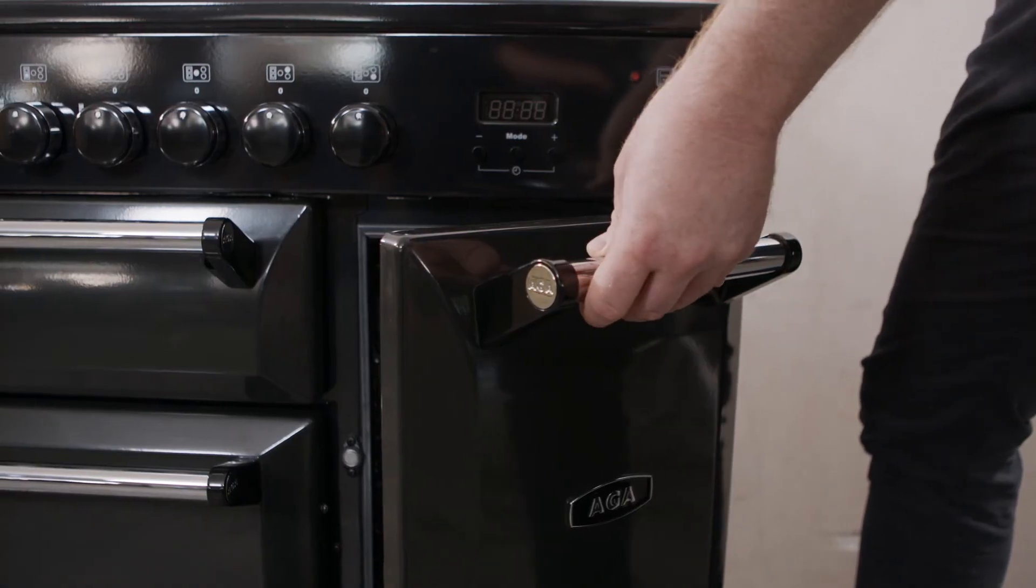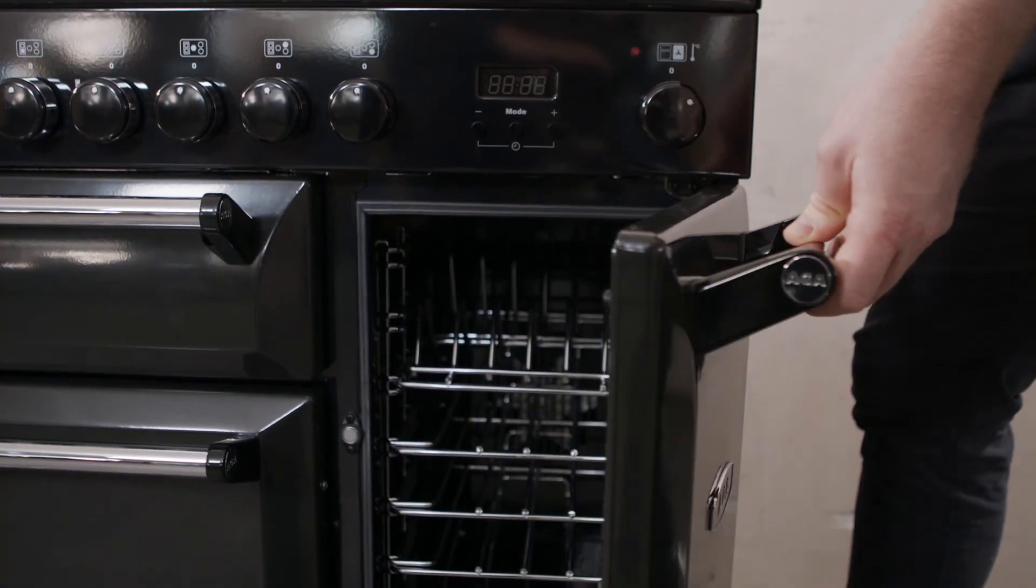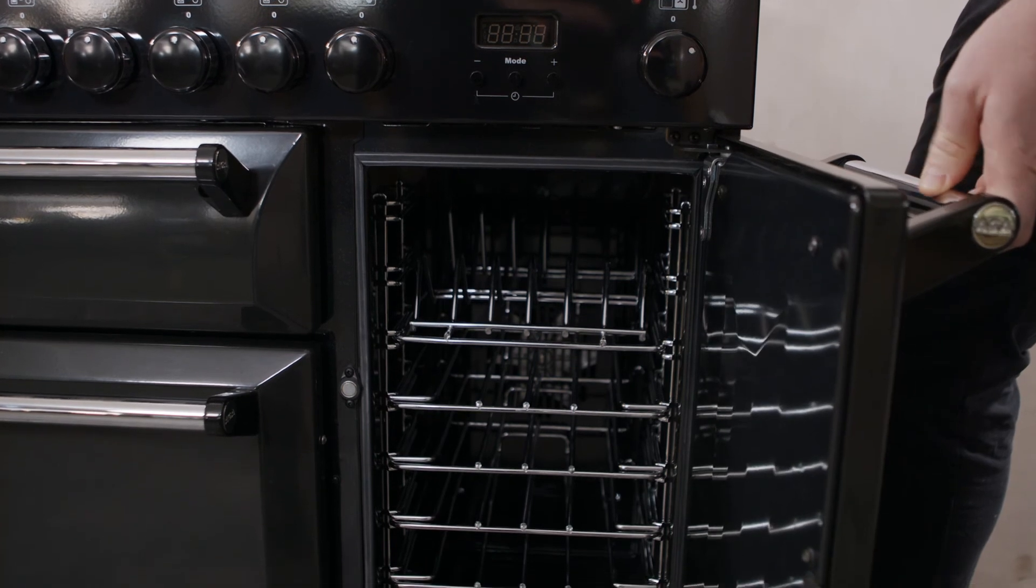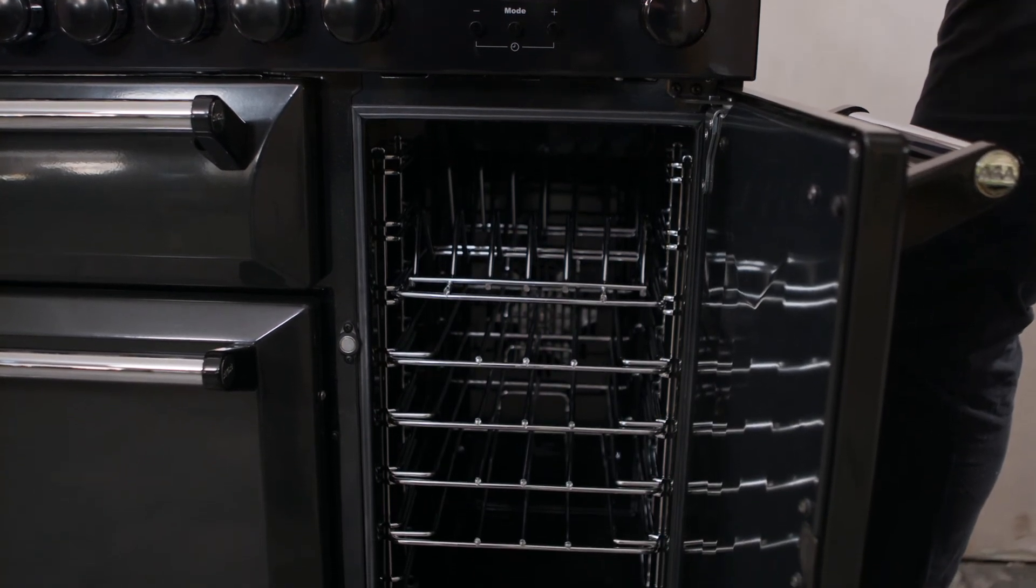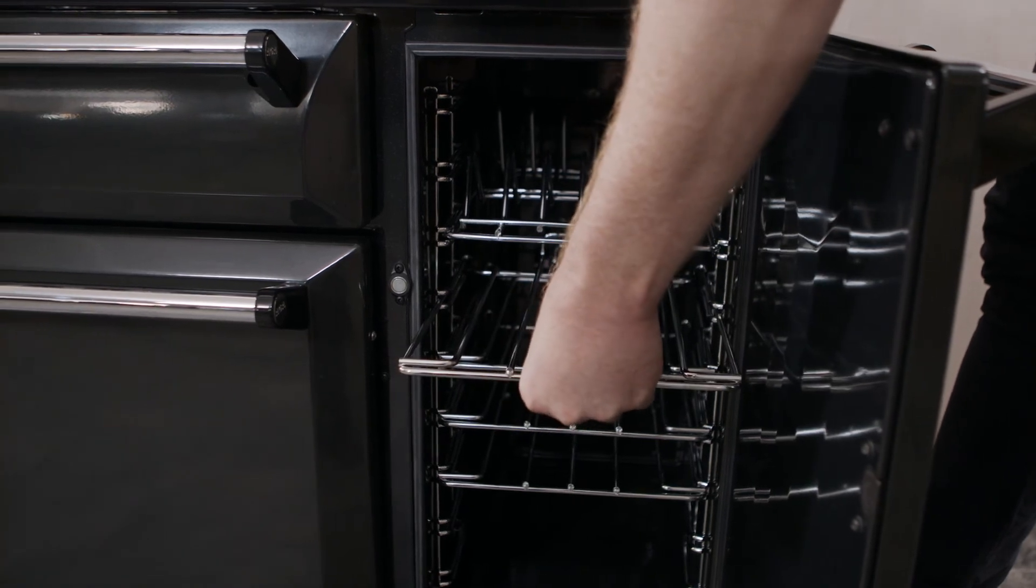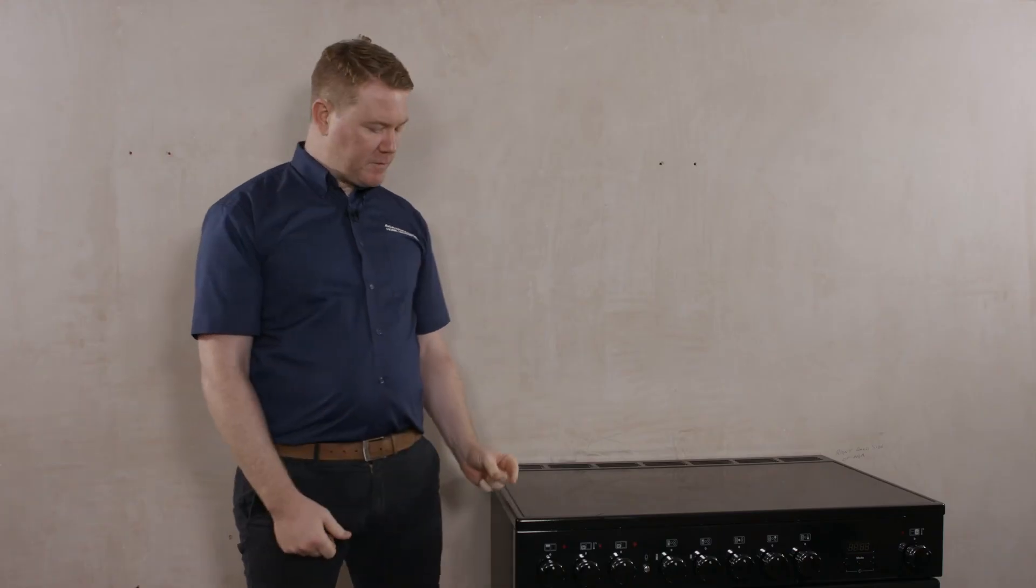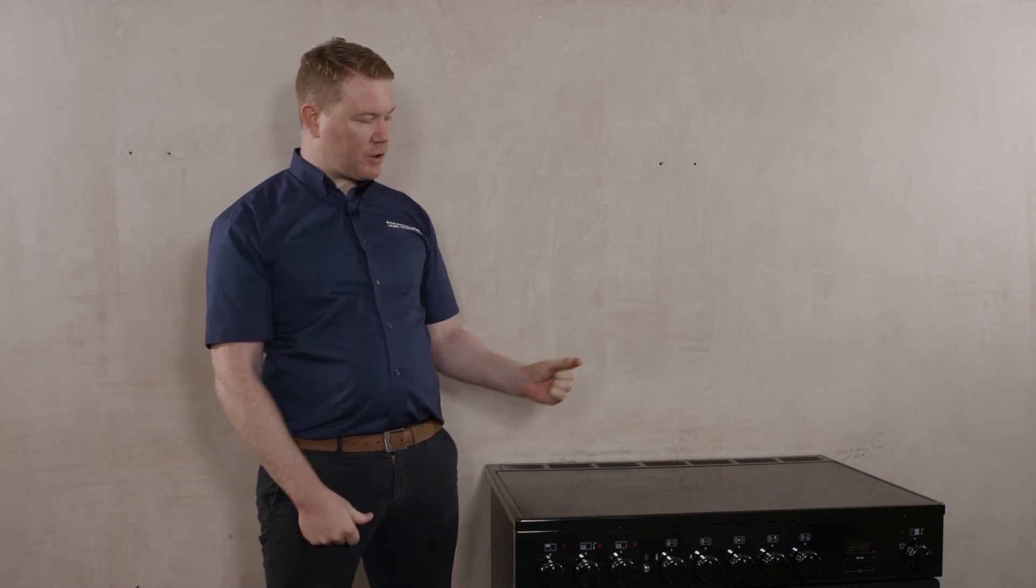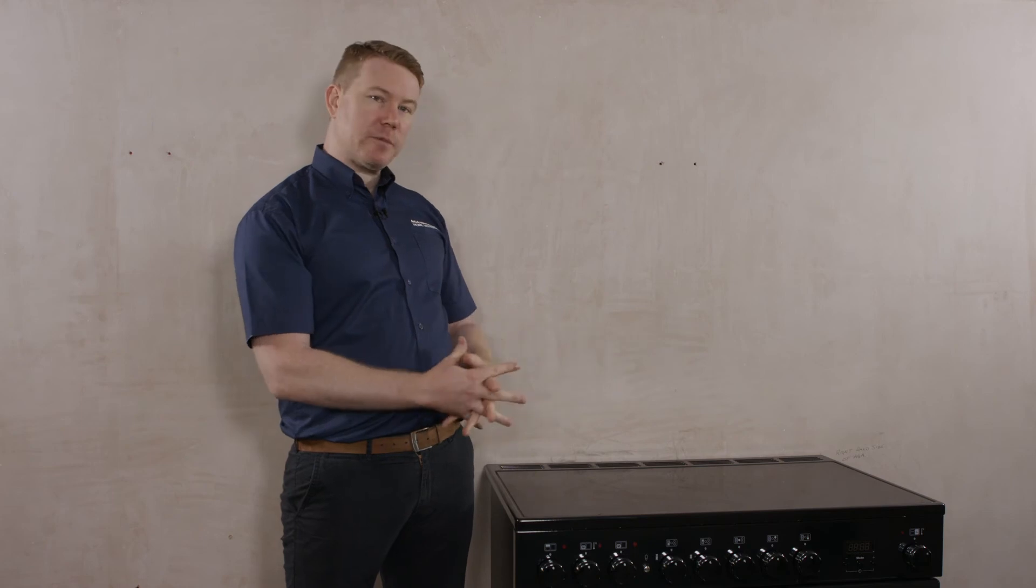Where cookers are fitted against side walls, 130mm clearance is required on the right and left hand side to allow the doors to open and for trays to be removed. A minimum 5mm clearance either side of the cooker is required to allow for the cooker top to be removed should it be required in the future for any maintenance work.